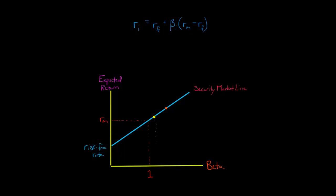For example, this point here might correspond to a beta of 1.24 — maybe that's Microsoft. So for Microsoft, we can ask what the expected return is. Given a beta of 1.24, maybe the expected return is 12%. As we go higher on the security market line, higher risk implies there's going to be a higher expected return.